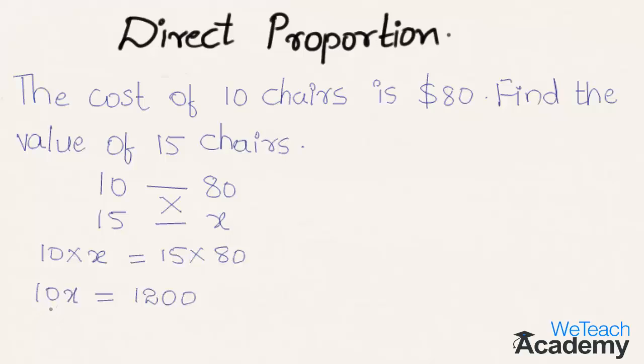As 10 is multiplying here, it divides when it gets transferred. So we get x is equal to 1200 by 10, and 10 times 120 is 1200. So we get x is equal to 120 dollars.